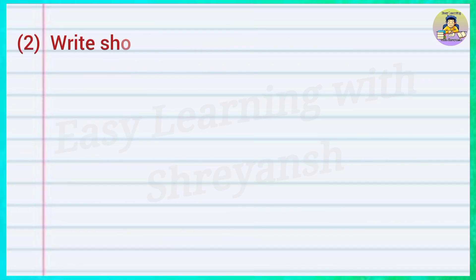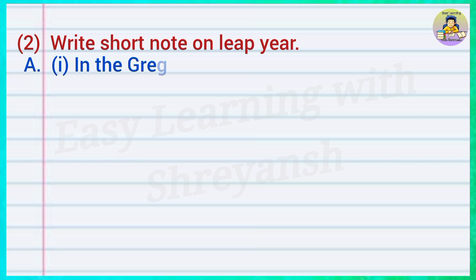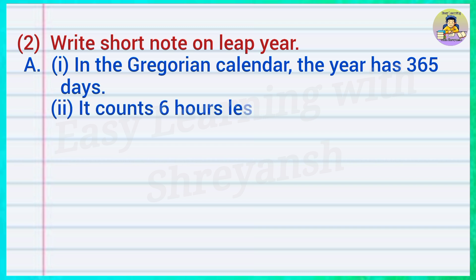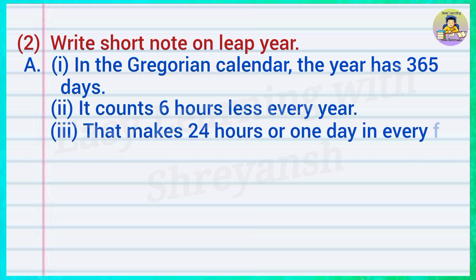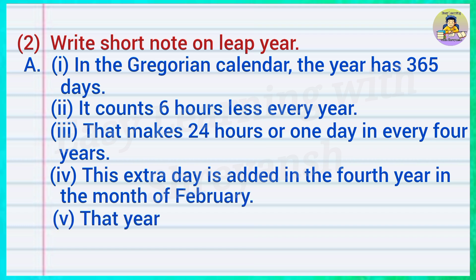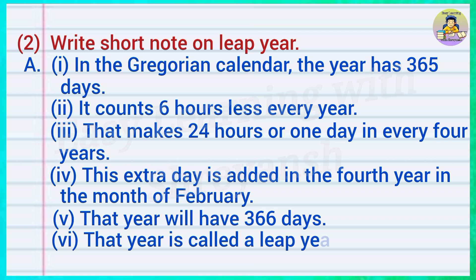Two: Write a short note on leap year. Answer: In the Gregorian calendar, the year has 365 days. It counts six hours less every year; that makes 24 hours or one extra day every four years. This extra day is added in the fourth year in the month of February. That year will have 366 days and is called a leap year.